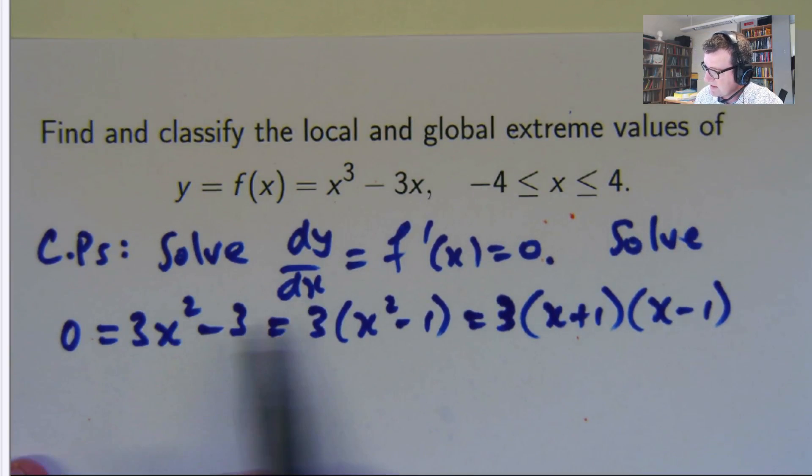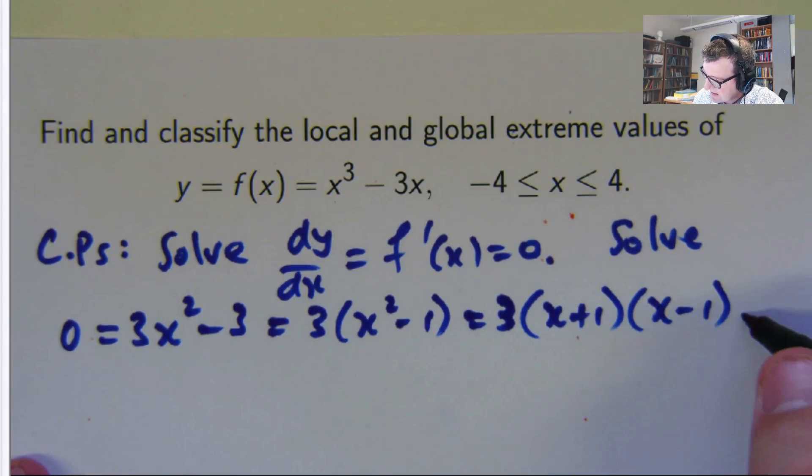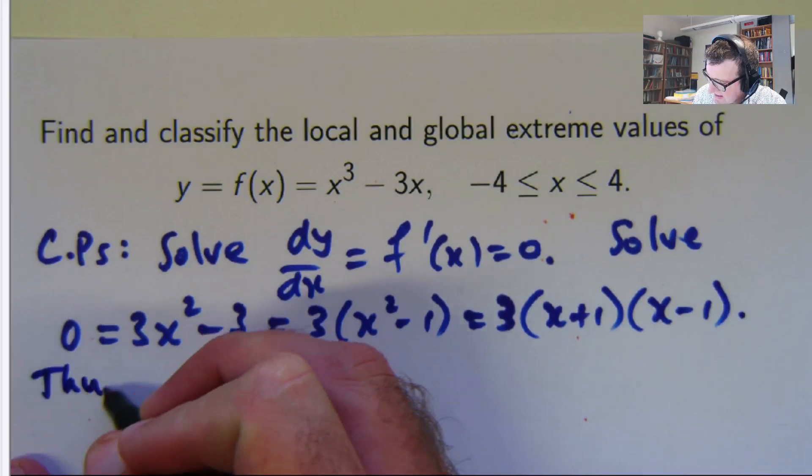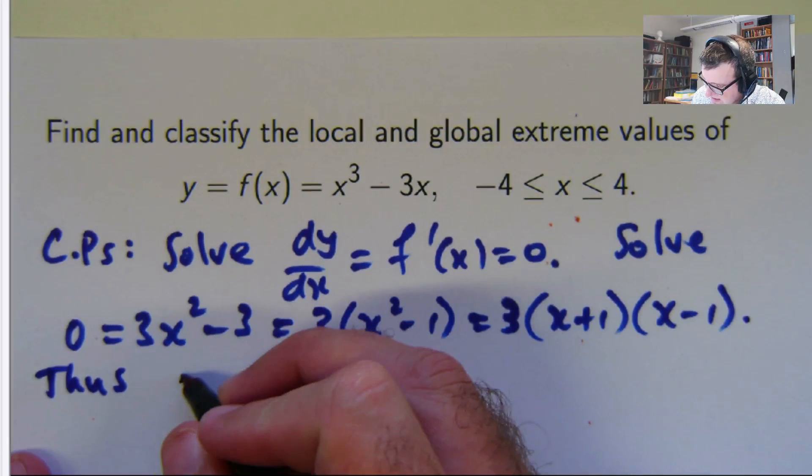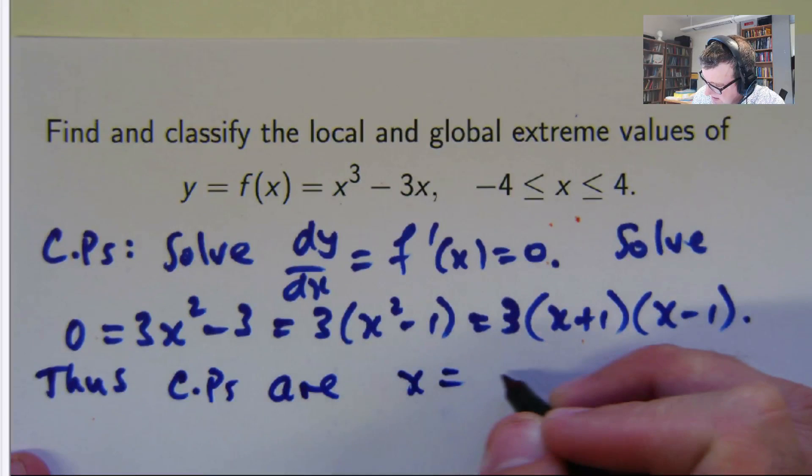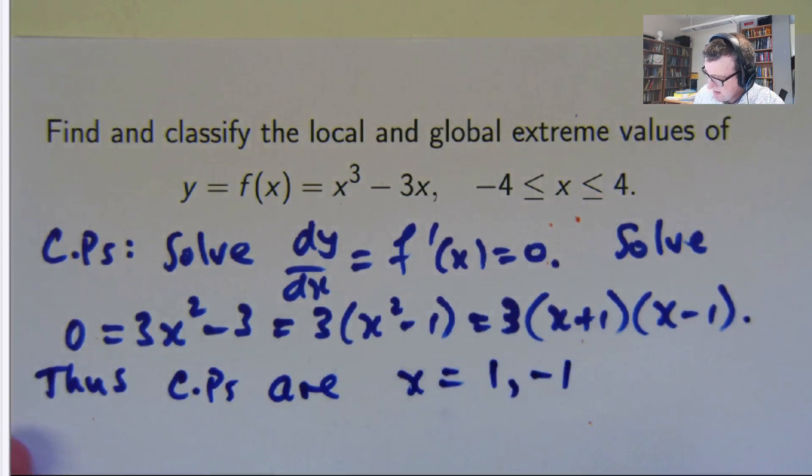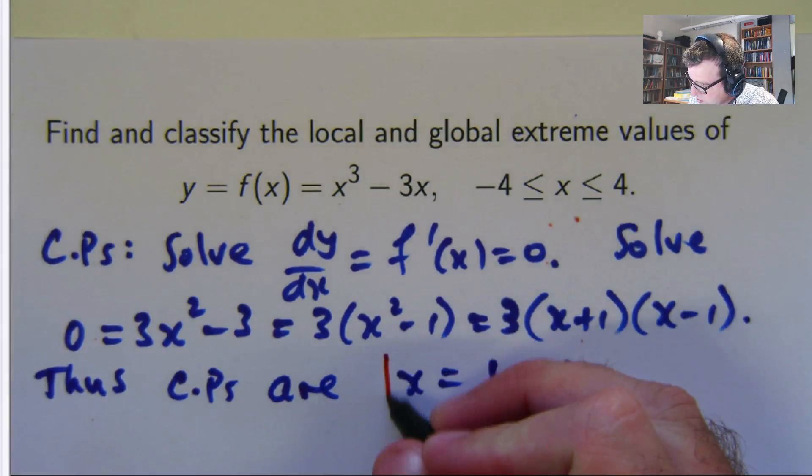What does this mean? Well, 3 can't be 0, x plus 1 is 0, or x minus 1 is 0. So that means x equals negative 1 or positive 1. The critical points occur at 1 and negative 1. So this particular function has two critical points.